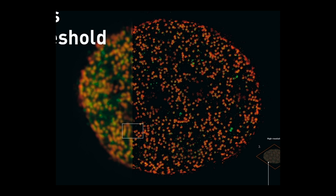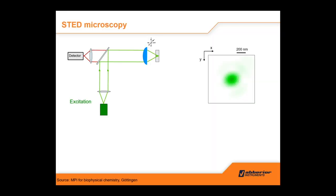To give a bit more introduction on STED: here on the left you see a sketch of a microscope. There's the excitation laser in green, then the objective lens in blue. Light travels through the objective lens into your sample and is focused onto it. From there, fluorescence is emitted and detected on the detector.